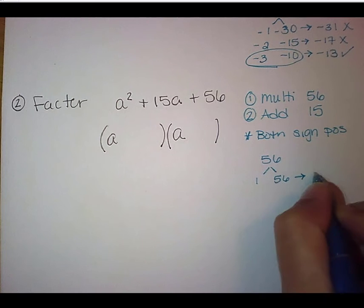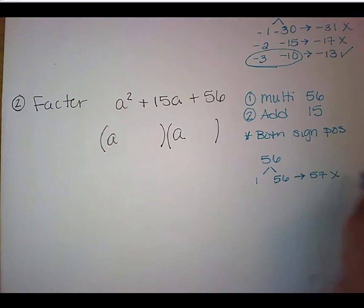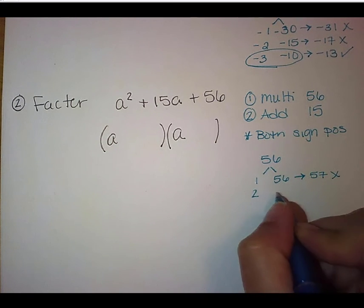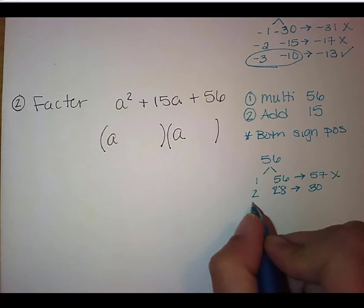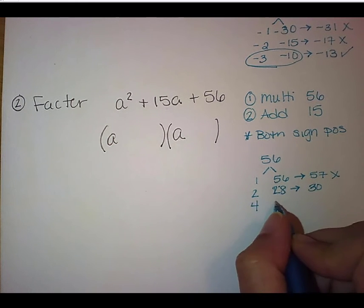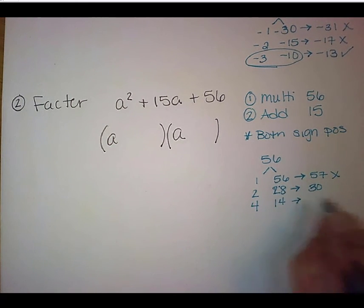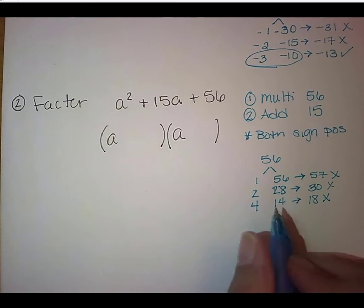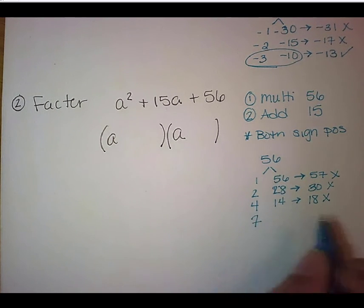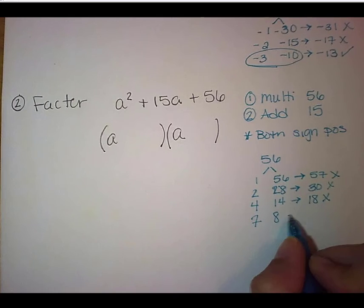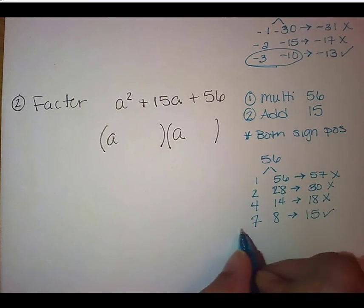But that definitely doesn't work because that is 57, which is way too big for what we want. We're only wanting 15 in our addition. So we've got 2 and 28. Again, that's too big because that's going to give us 30. We have 4 and 14. And that is going to give us 18, which, again, is too big. And the next thing up that divides evenly into 56 is 7. And we have 7 and 8. There it is. There's our 15 we were looking for with 7 times 8.